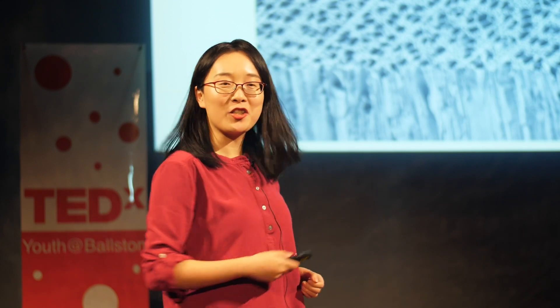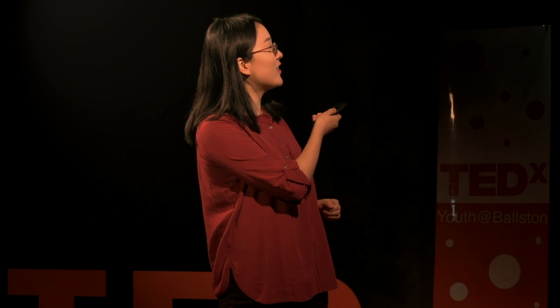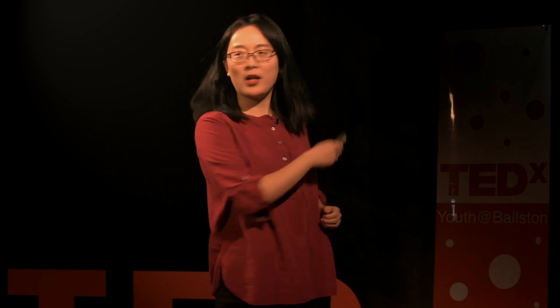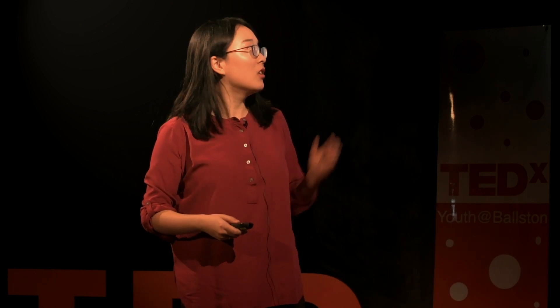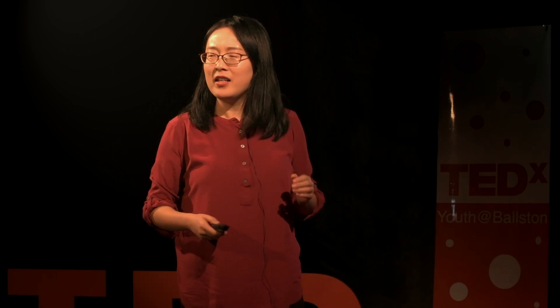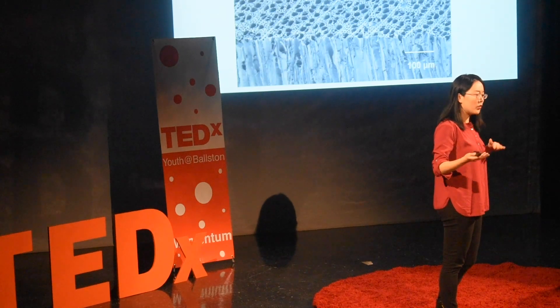Let's take a close look at wood. This is a picture of many trees — let's take a closer look. This is a typical wood block, and that's typically what a wood block looks like: it's kind of brownish and yellowish.